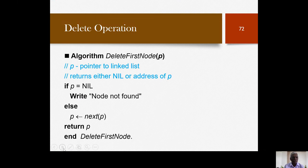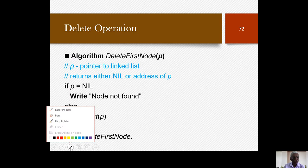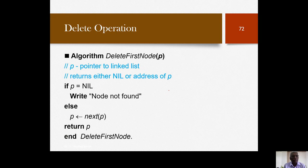This slide shows the deletion operation of the first node. As mentioned, there are three scenarios: deleting a node that happens to be the first node, deleting a node in the middle of the linked list — in which case we need to search for the node to be deleted — and then we can deploy the deletion process, which we'll see later.